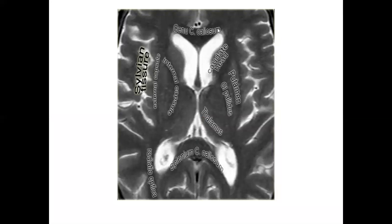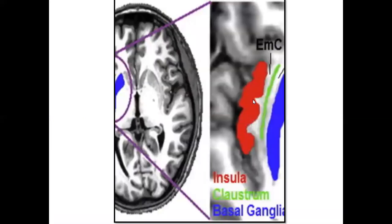You can see the genu of the corpus callosum, lateral ventricle, caudate nucleus head, thalamus, globus pallidus, and putamen — globus pallidus and putamen together forming the lentiform nucleus — and this is the insular cortex. In a color-coded view, red is the insular cortex, this is the claustrum, external capsule, and these are the parts of the basal ganglia — that is the putamen.